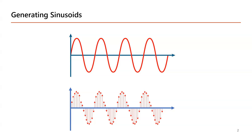The Nyquist criterion says you need to sample at at least twice the maximum frequency, but twice won't be sufficient for good signal reproduction. So we will sample at much higher than Nyquist. The basic idea is that instead of an analog signal we will have discrete values by sampling — that is how we are going to generate and store these signals.